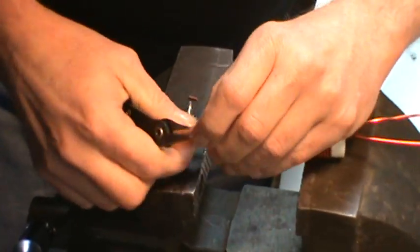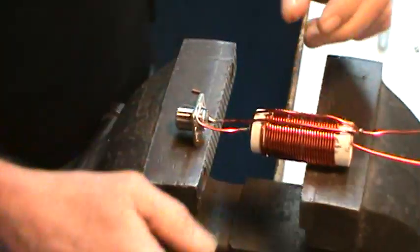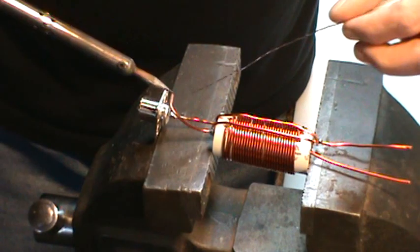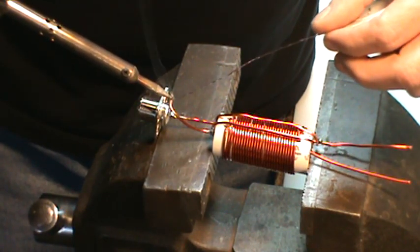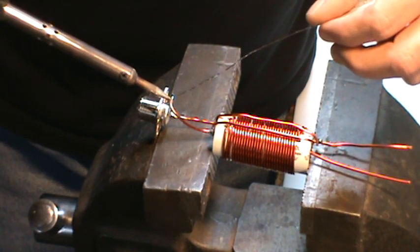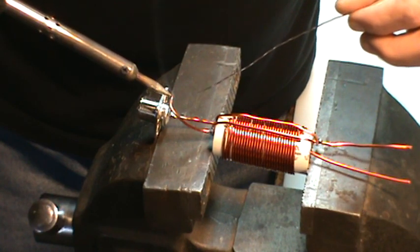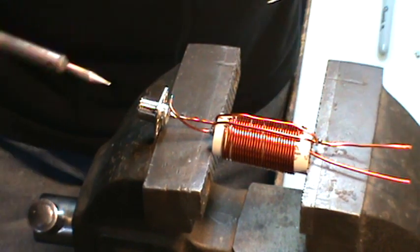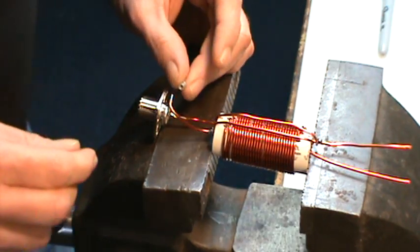Let's trim it out. I'll go ahead and put a little solder on this wire first, bend it out a little bit.